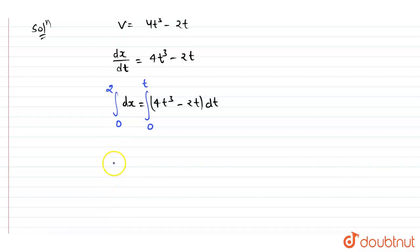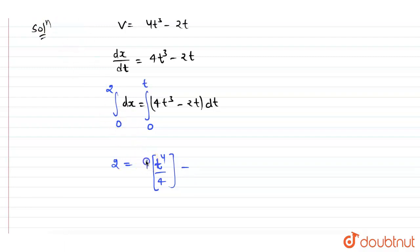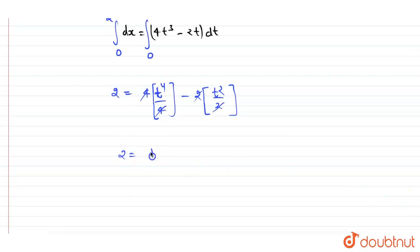Integrating: the left side gives x equals 2. On the right side, integration of 4t³ gives 4 times t⁴ over 4, and integration of 2t gives 2 times t² over 2. The 4s and 2s cancel, leaving us with 2 equals t⁴ minus t².